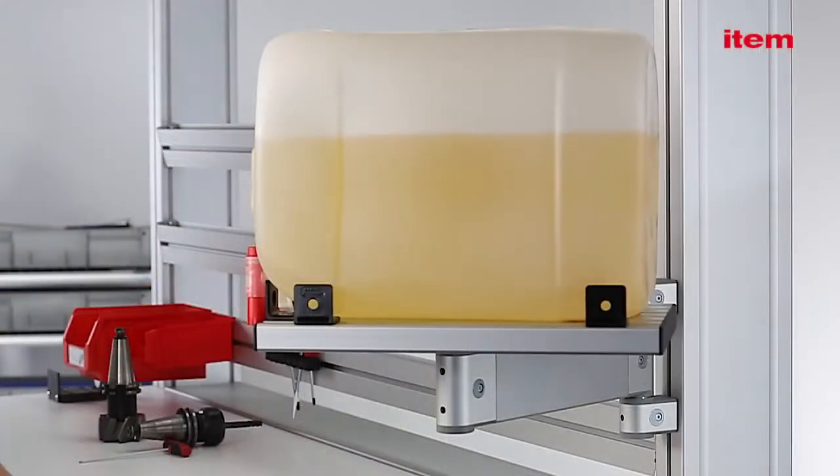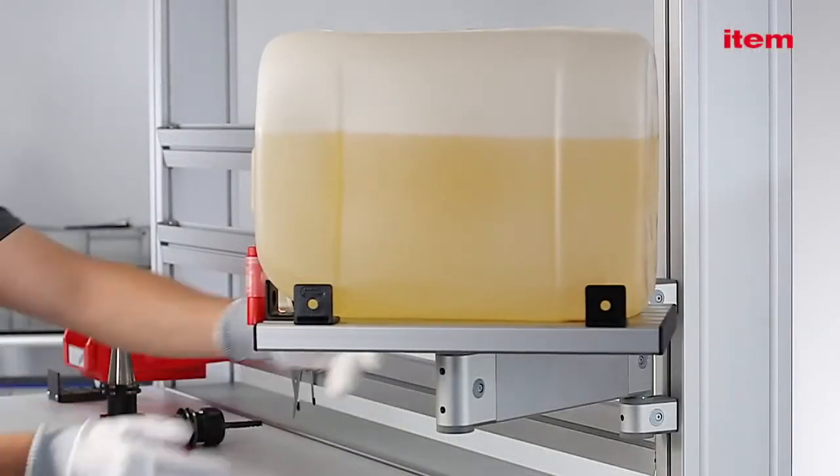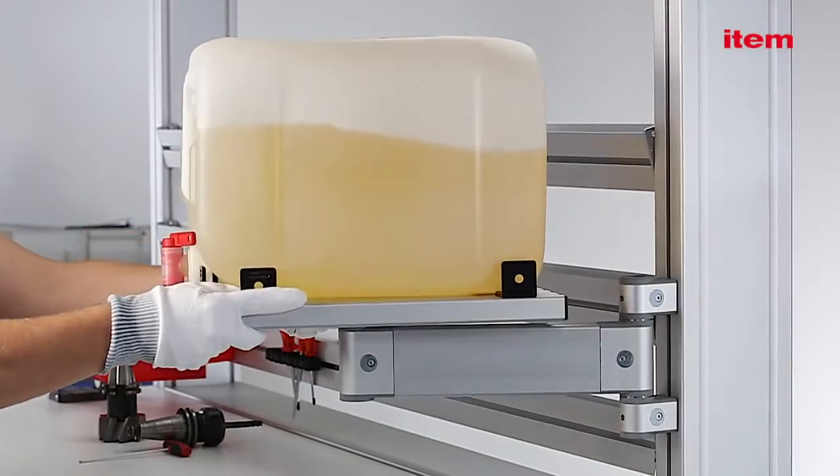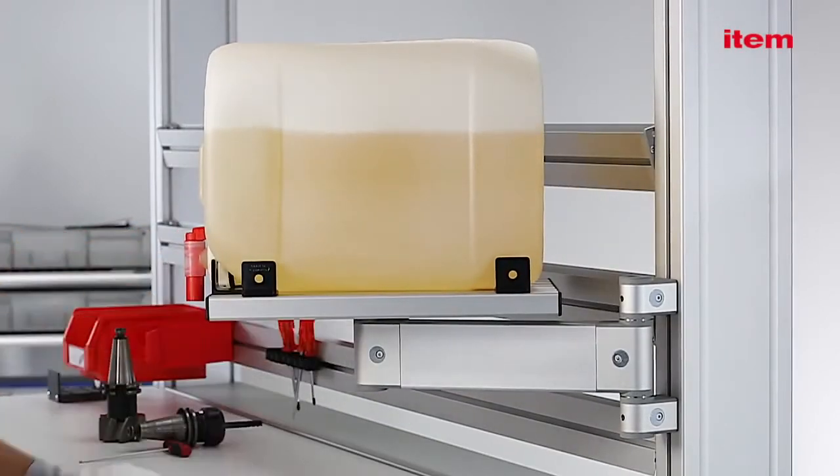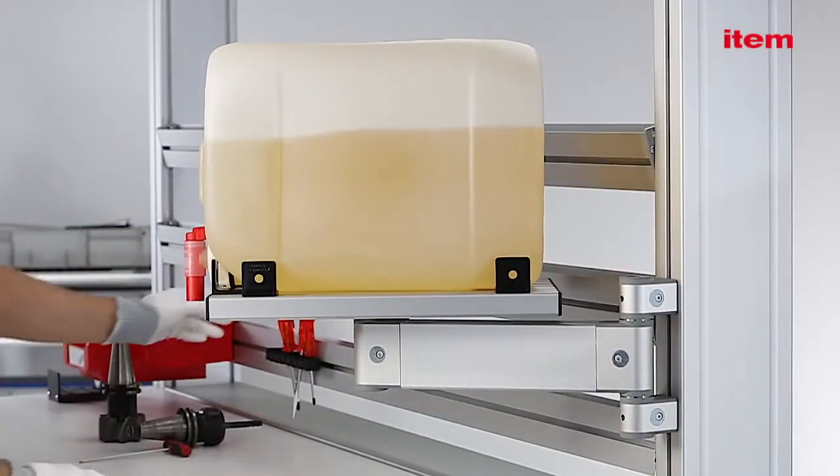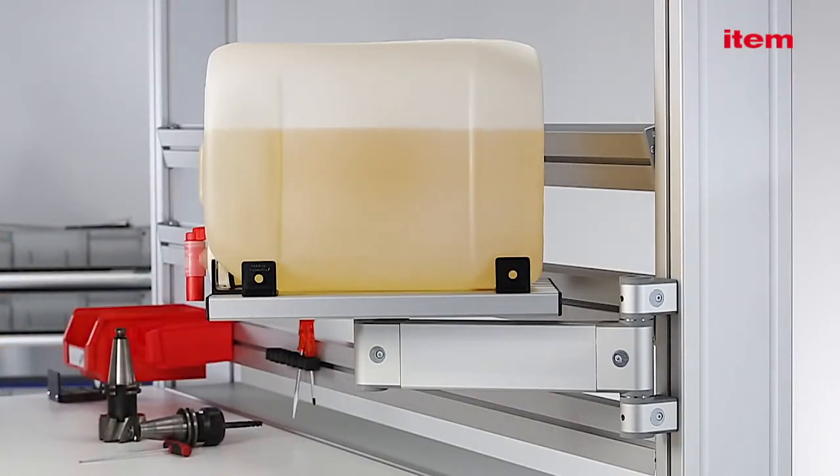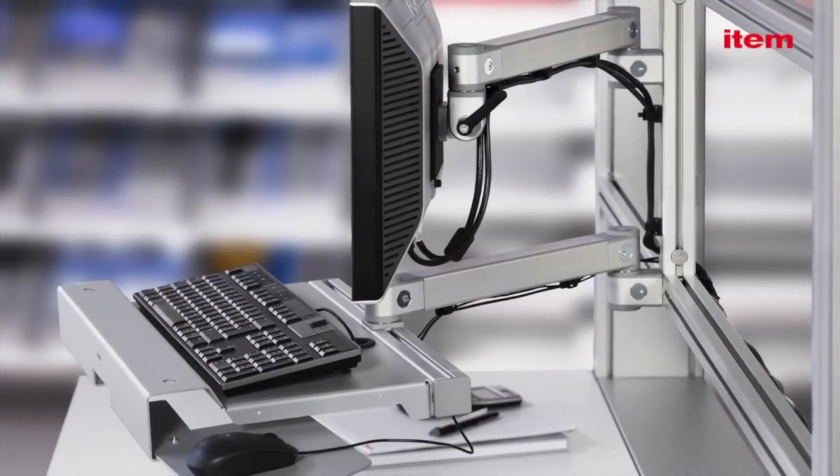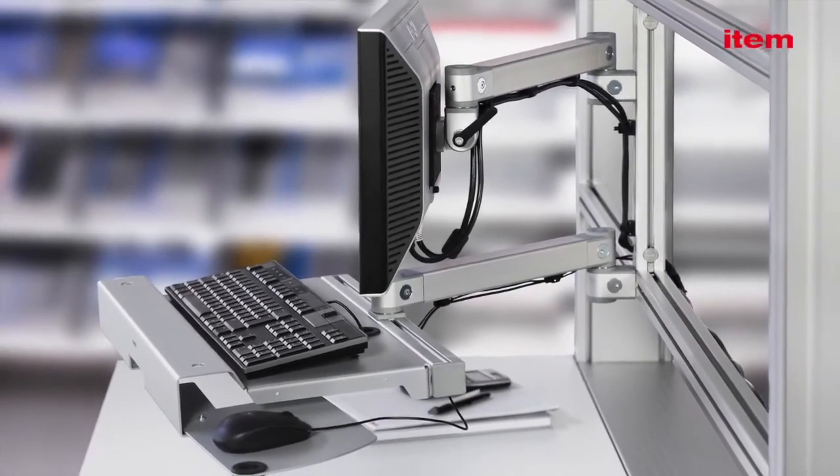When a long reach and high carrying capacity are called for, double pivot arm 880695 heavy duty is the ideal solution. It can be folded into virtually any position and then locked in place. As a result, tools and materials can always be kept in easy reach.